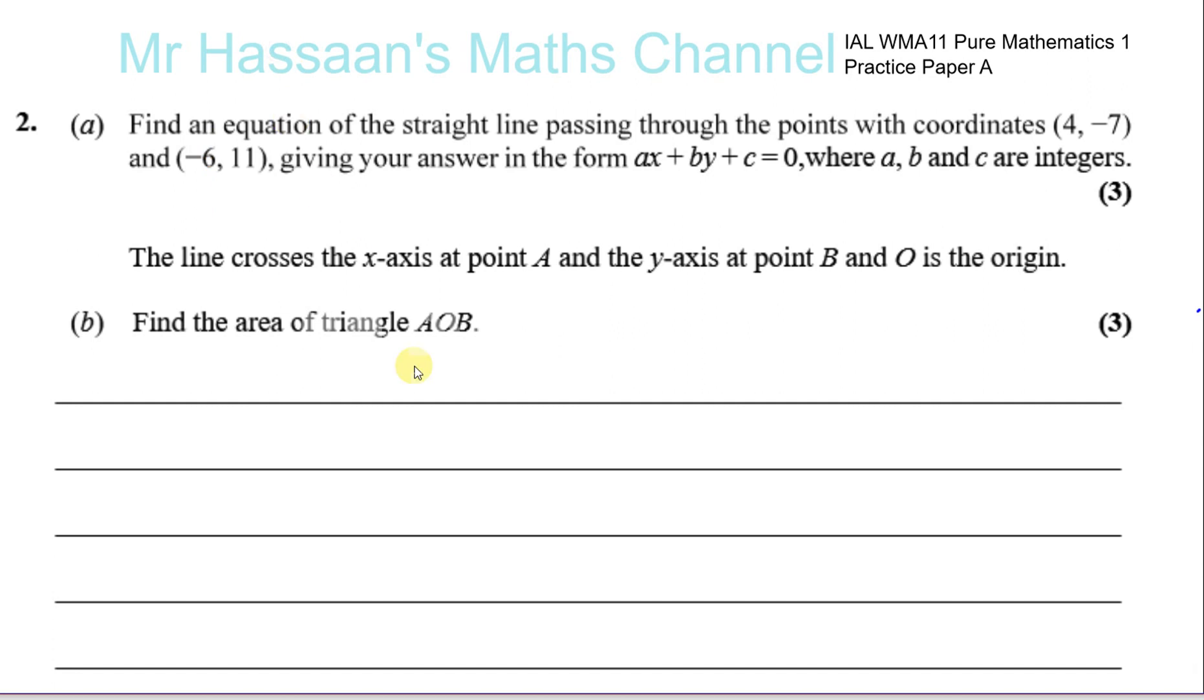To find the equation of a straight line, we need two pieces of information: the gradient of the line and any point on the line. I've got two points on the line. Let's choose (4, -7) - the numbers look a bit easier.